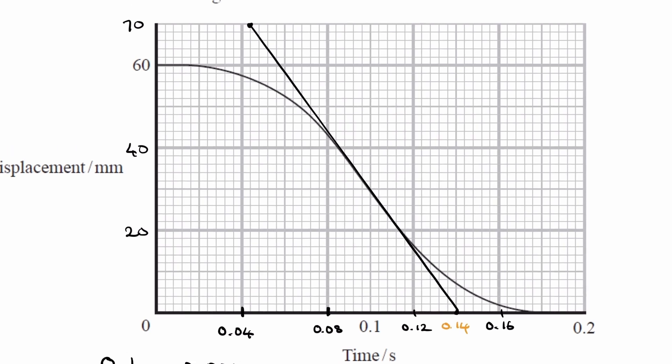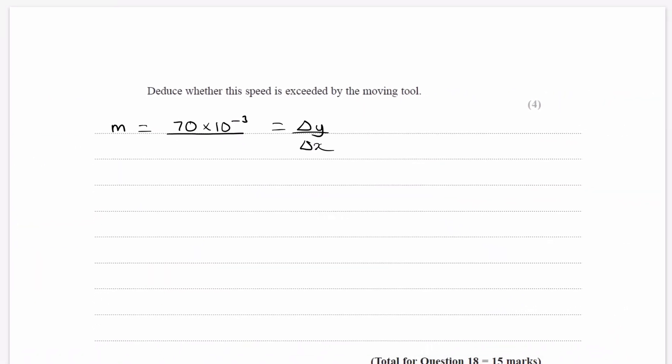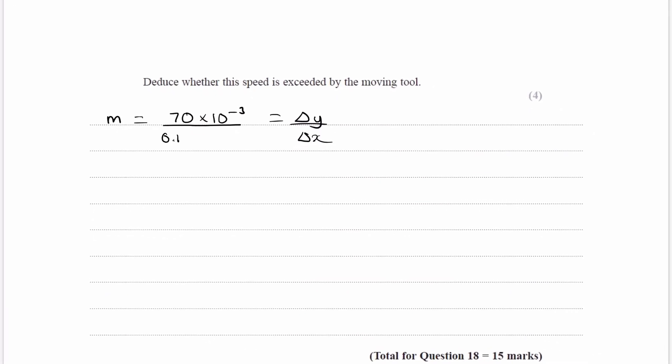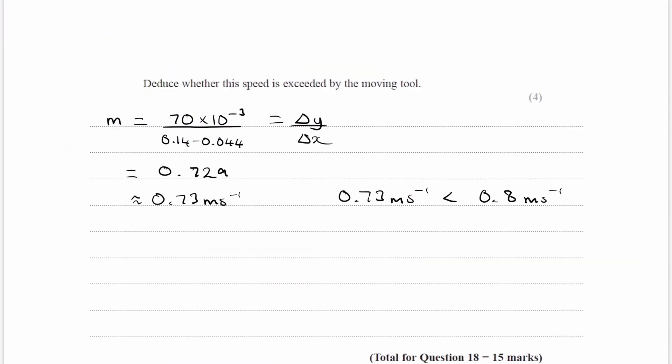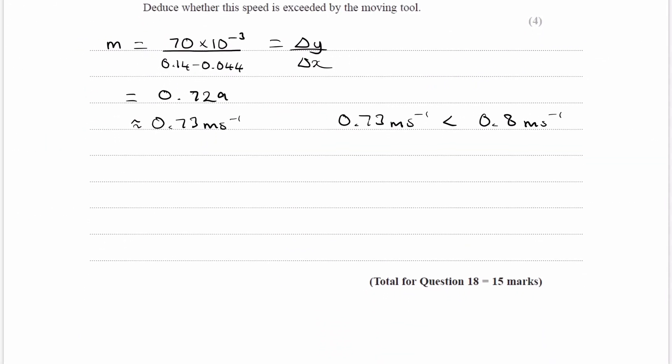Our change in time is 0.14 minus 0.044. We put this into our calculator and end up with 0.729, so about 0.73 meters per second. 0.73 meters per second is less than 0.8, which is the maximum speed that is allowed. So it's within the limit. We have a brief conclusion, and that will be enough for this question.